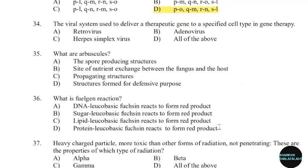34th question: The viral system used to deliver a therapeutic gene to a specified cell type in gene therapy. Correct answer: Option D — All of the above.